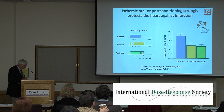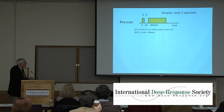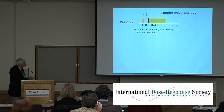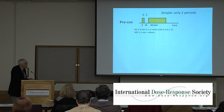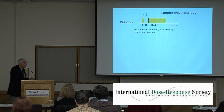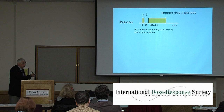For preconditioning, it's pretty simple. You've got two periods, and it turns out that a five-minute occlusion is as good as a 10-minute occlusion, just as protective. Two minutes is the minimum for a rabbit — if you go down less than two minutes, you won't get any protection. Five minutes seems to work for most species. The reperfusion period can be anywhere from one minute to 60 minutes, it doesn't seem to make any difference. After that, the effect wears off. So you've got about a 50-minute time period where the heart is in a protected phenotype. Rats like at least two periods — one period won't do it, but two or more will.